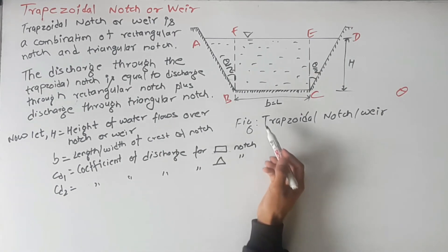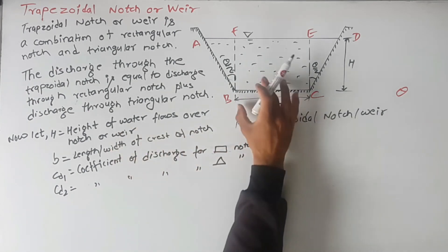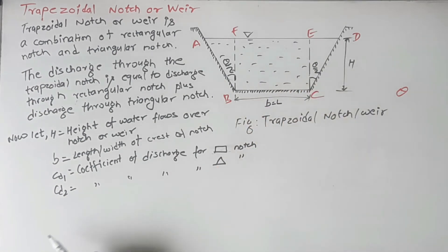So we can calculate the total discharge now. Total discharge is equal to rectangular plus triangular. First of all, calculate the discharge through rectangular notch.